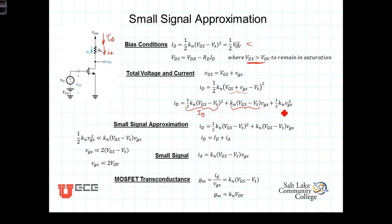If we restrict VGS such that this term here is significantly less than the middle term, we can solve this for VGS. Dividing both sides by VGS gives us that VGS must be significantly less than two times the overdrive voltage. That becomes our small signal approximation. If we can constrain VGS so it is significantly less than two times the overdrive voltage, this term here is negligible and we're left with these two terms.